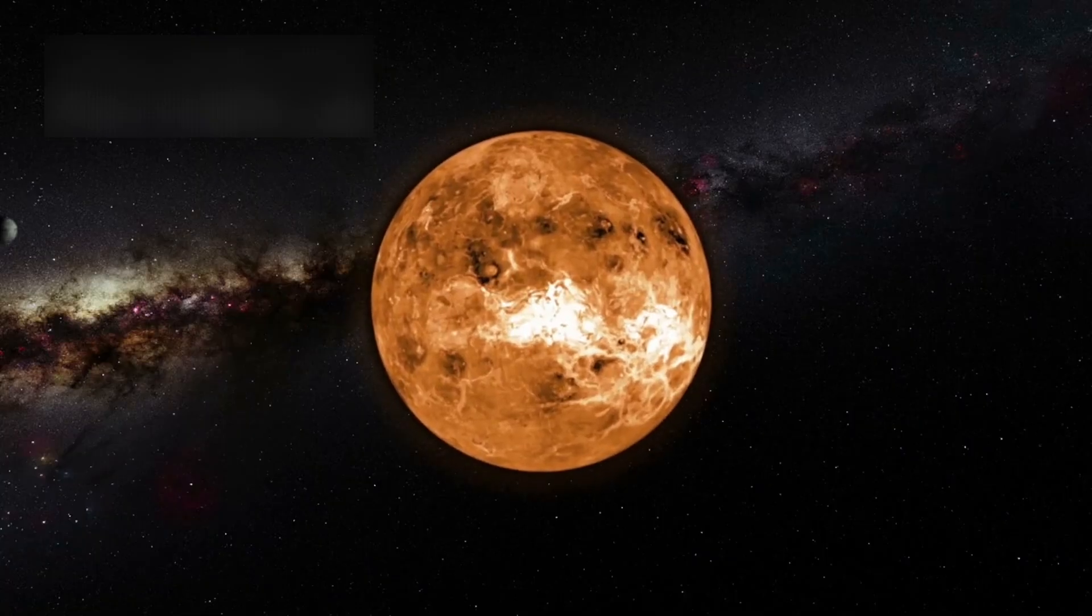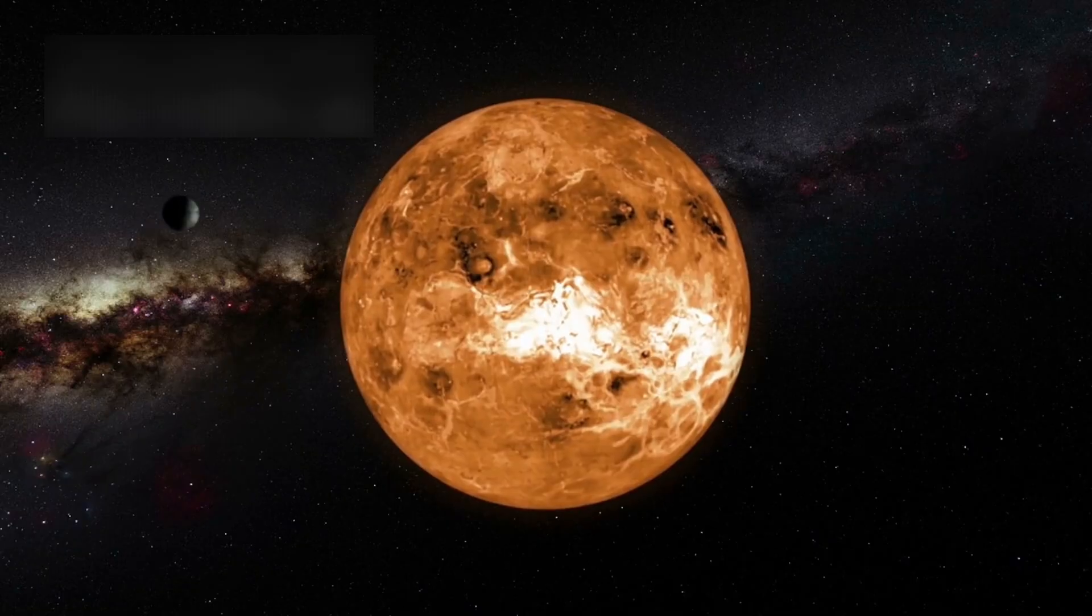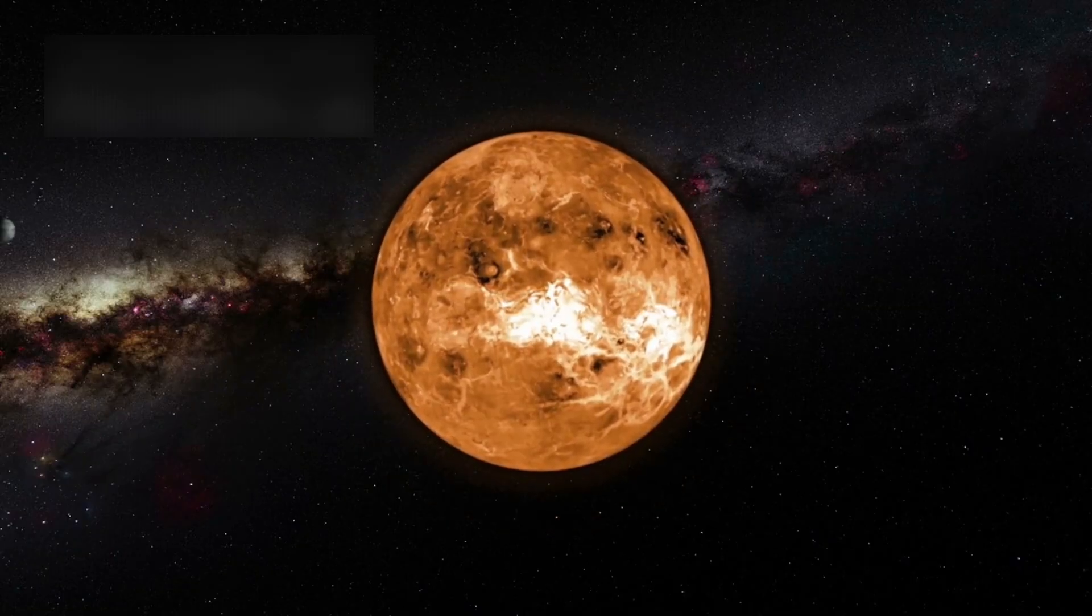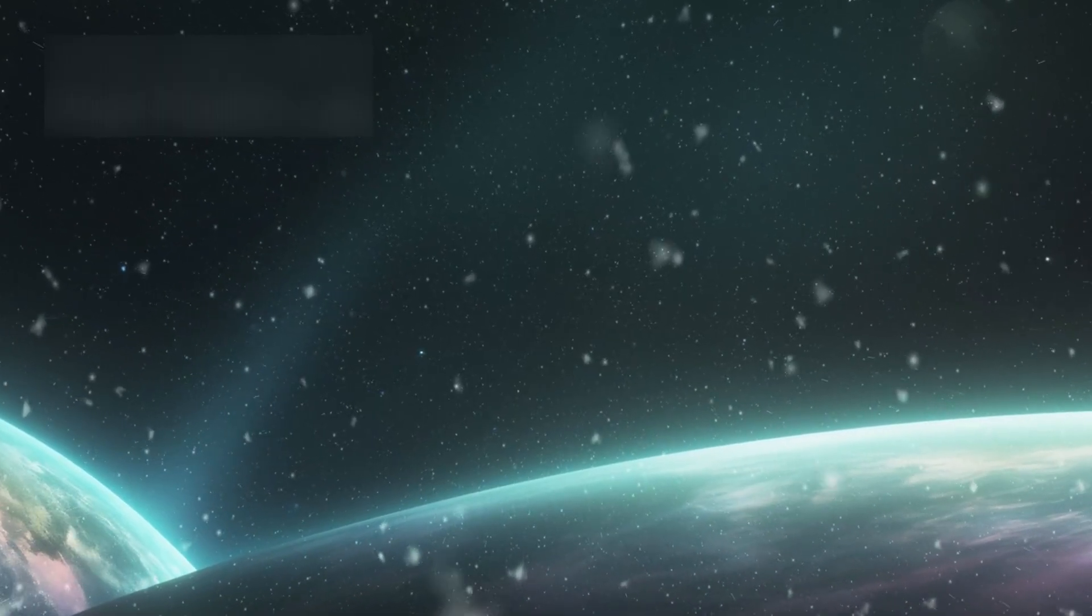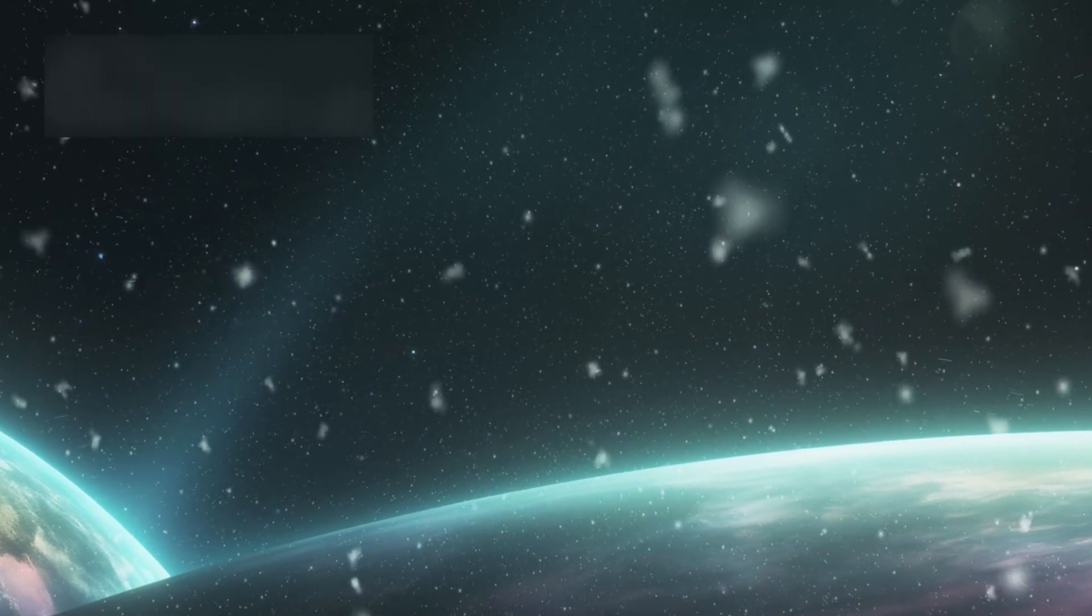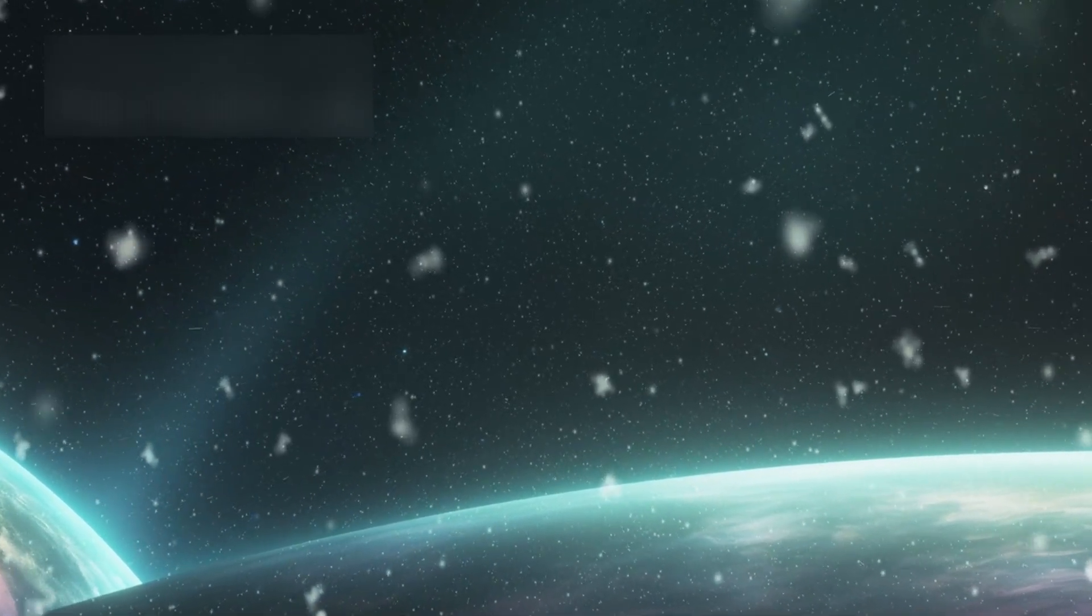Strange, steady glows seem to be shining from a planet just over four light-years away. That planet is Proxima Centauri b, the nearest known exoplanet to Earth, and the discovery is sparking extraordinary questions.